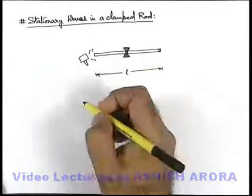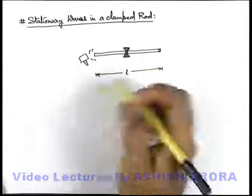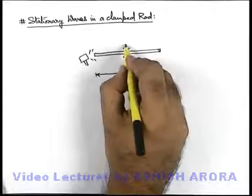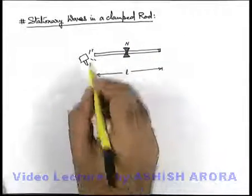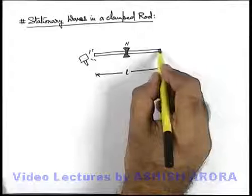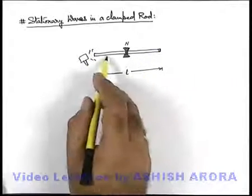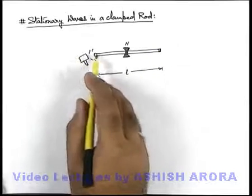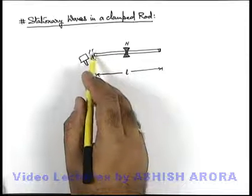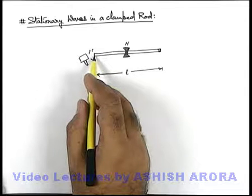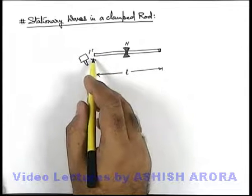It may produce stationary waves. Obviously, as the middle point is clamped, it must be a node. At the open end, as the waves are reflected from air or from the closed end of the rod, an anti-node is obtained here.